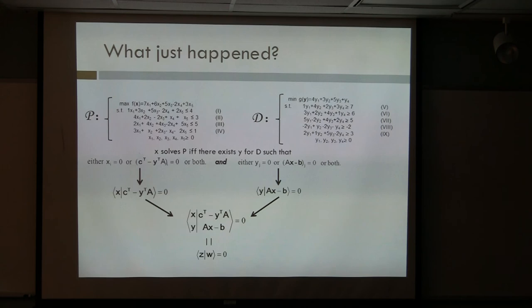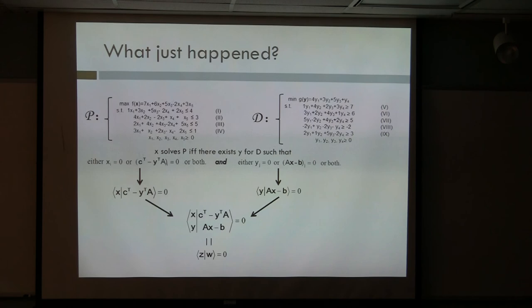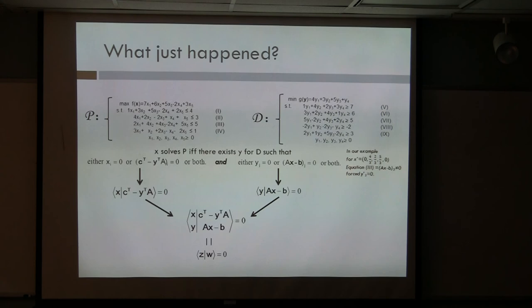So what just happened? You have the primal problem and the dual problem, and at the optimum they have to be equal. You have this inner product: x_i equals zero, or c transpose y transpose A sub i is zero, and similarly for property two. If I clump everything together in a big vector, the left-hand side is z and the right-hand side is w, and the inner product between these two vectors has to be zero in order to have an optimum.